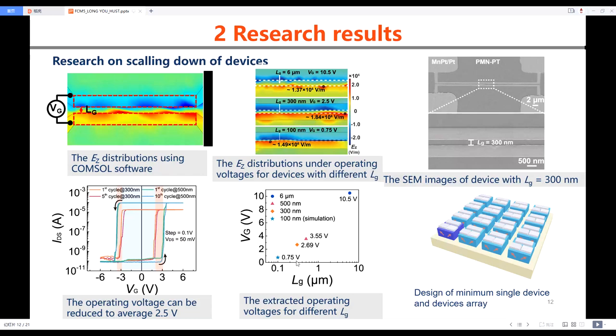This figure summarizes the operating voltage for different LG. With LG decreasing, the operating voltage reduces quickly. We also illustrate the minimum single-device structure design, which is potentially scalable down to dimensions with only 2 domains, since the crack is most likely induced along the domain boundary.